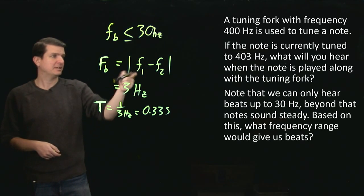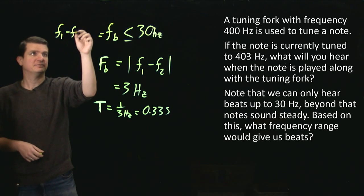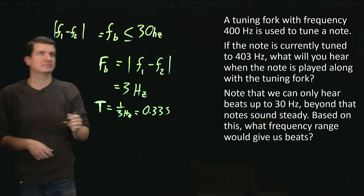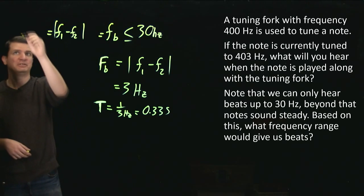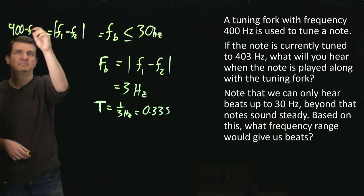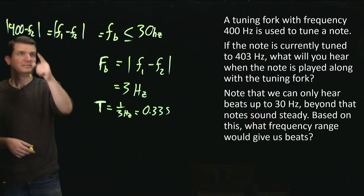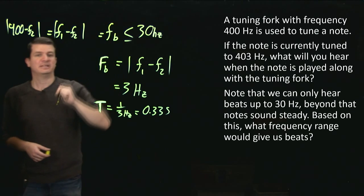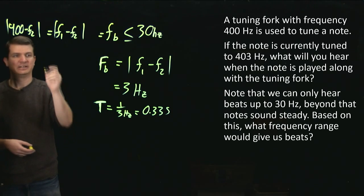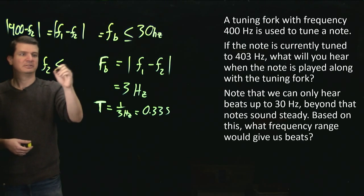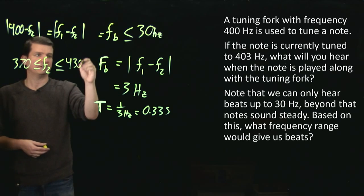then that means we want this f1 minus f2 to be less than that. But as we said, the tuning fork is always 400 hertz, and then we can get the range of f2s. So this needs to be less than or equal to 30. That means f2 has to be within 30 hertz of 400. And so f2 has to lie within this range of 370 to 430 hertz.